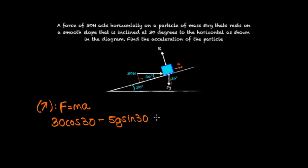And that's equal to MA and the mass is 5 kilograms and the acceleration is what we're trying to work out. So dividing both sides by 5 is going to give us a is equal to 6 cosine 30 minus g sine 30.